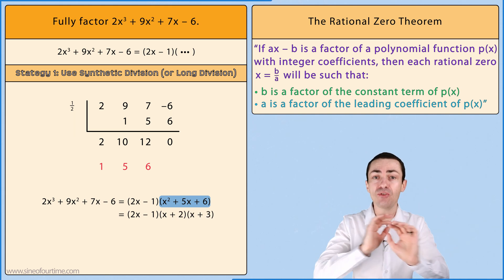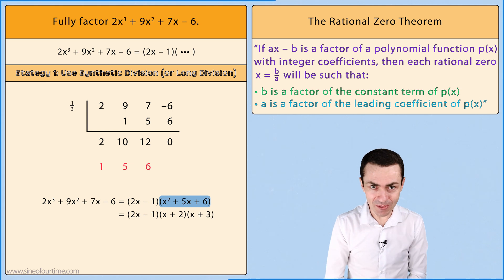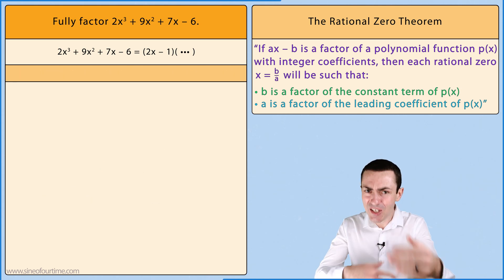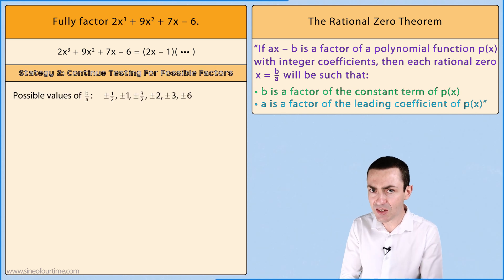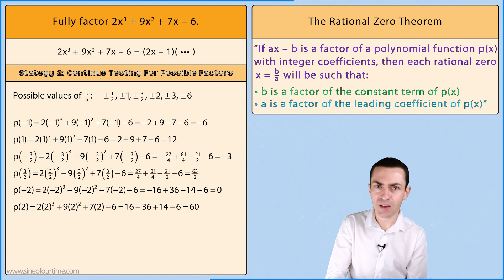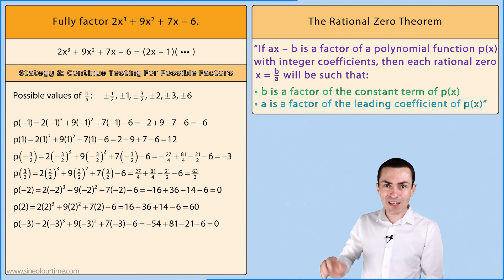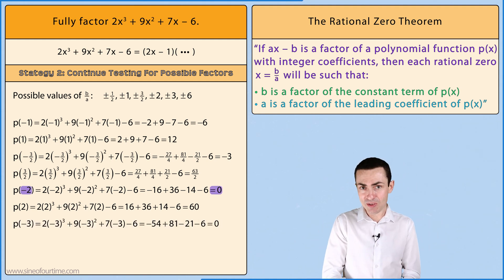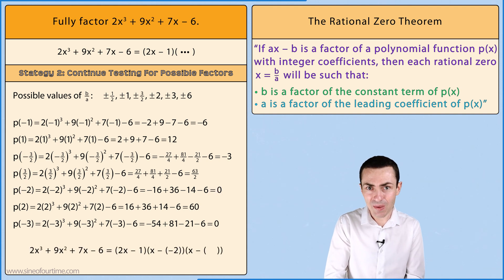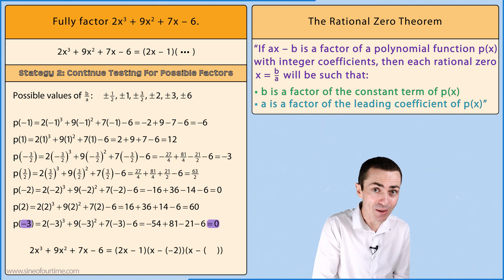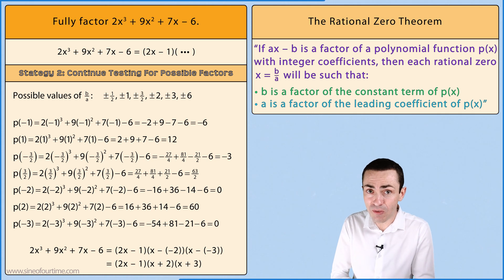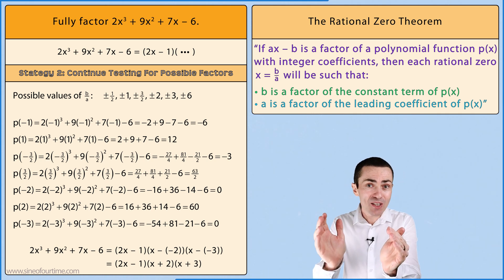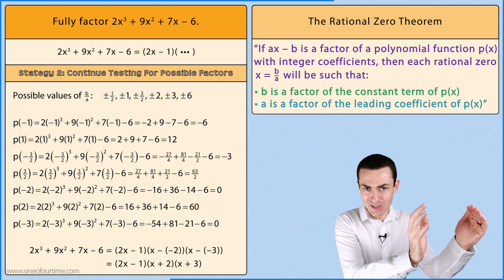The second strategy is just to continue testing possible values of b/a by using the factor theorem. From this we can see that b has a value of -2 in one of the remaining factors. And we can also see that b has a value of -3 in the other remaining factor. When simplified we get the fully factored form of this polynomial which is (2x - 1)(x + 2)(x + 3).